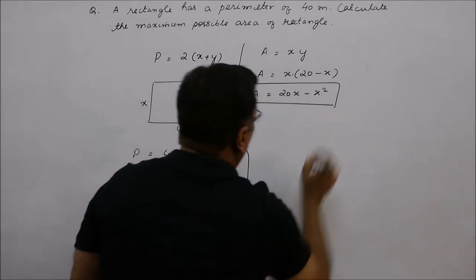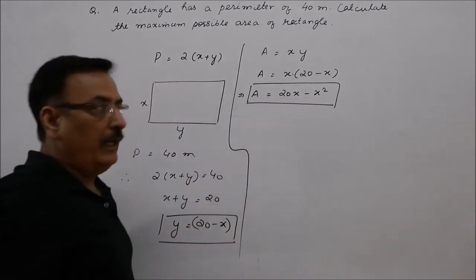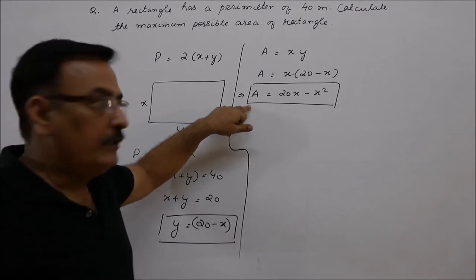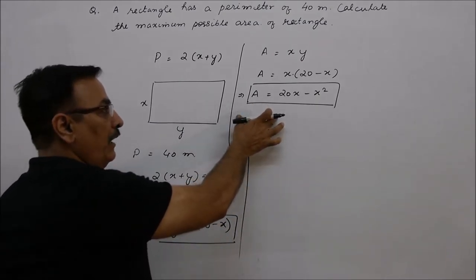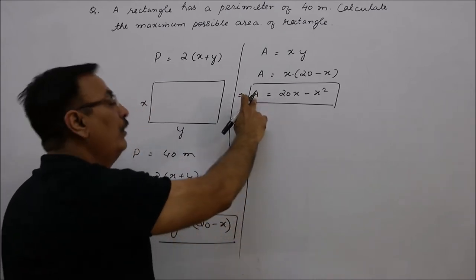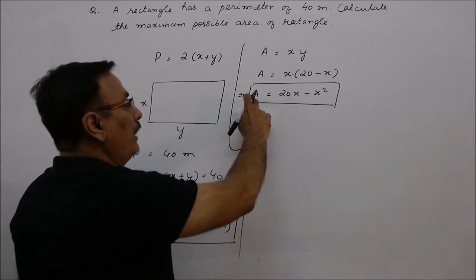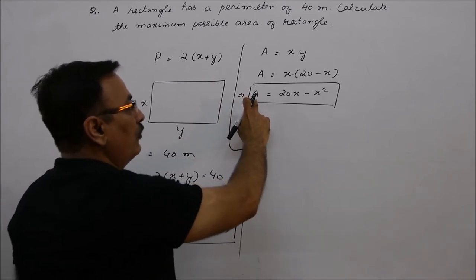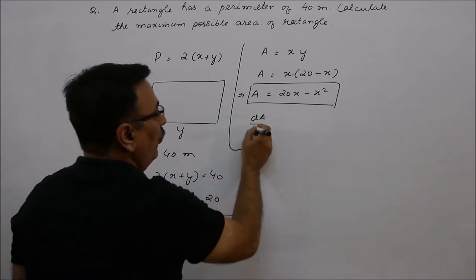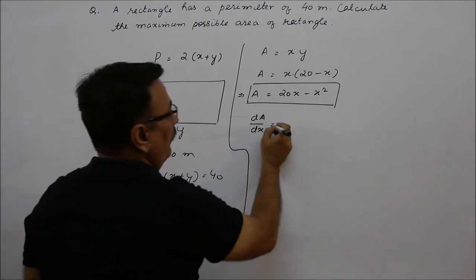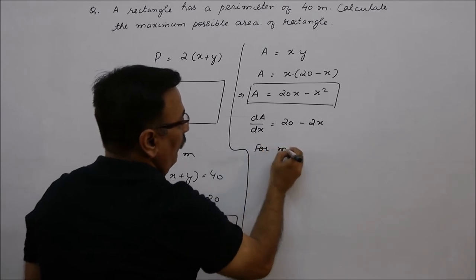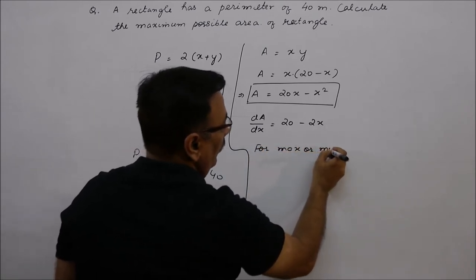Now, we have to find the maximum area's value. So, the first step is find dA over dx. For maxima or minimum, dA over dx equals 20 minus 2x.